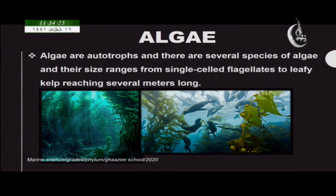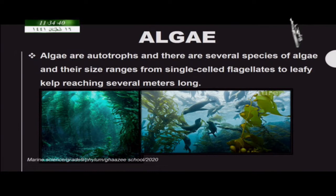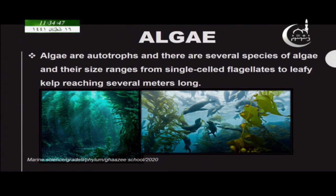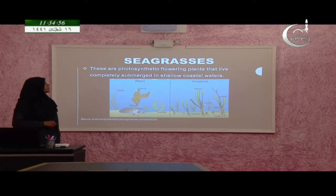Algae are autotrophs — organisms that can produce their own food. Algae range from single-celled organisms to very large organisms like kelps. These are the kelp forests — kelps are the largest algaes and are several meters long.